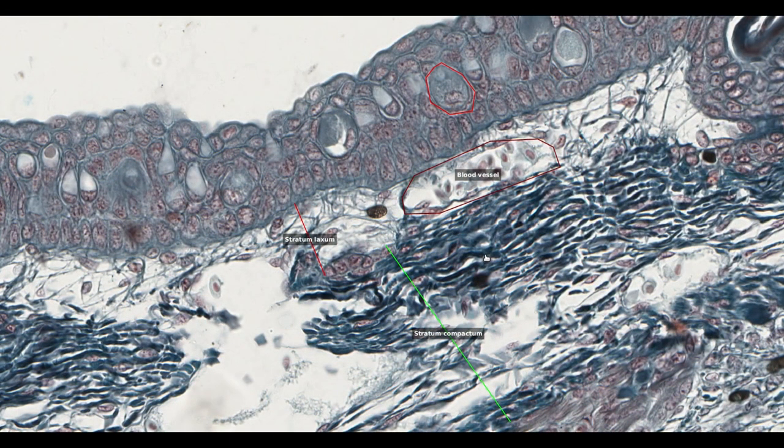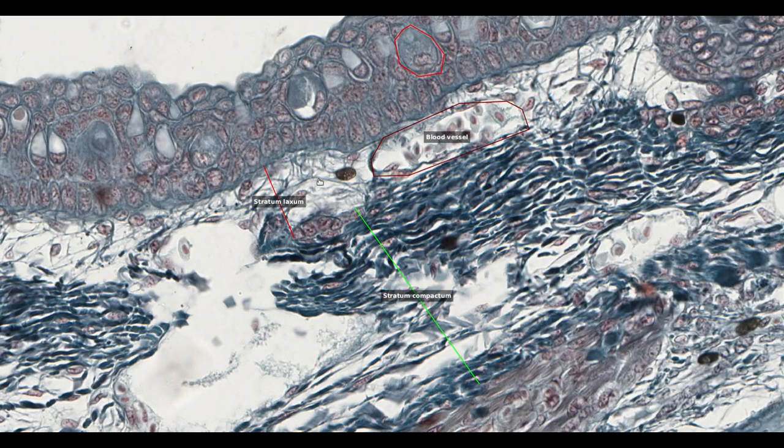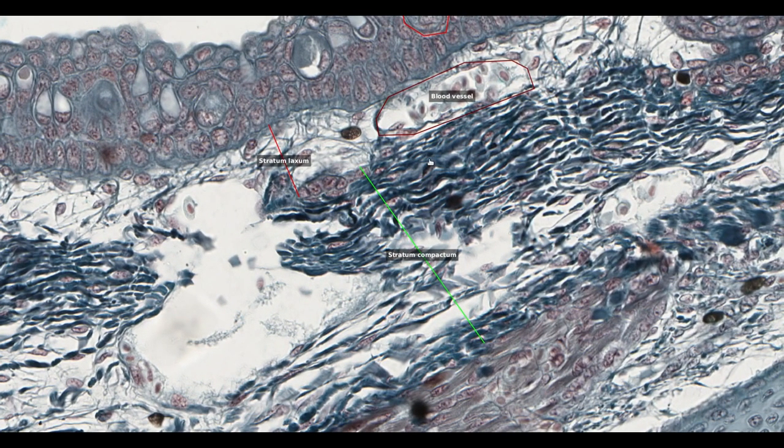Returning to slide 249, we can venture down into the dermis. The dermis is also made up of layers. That immediately below the epidermis is called the stratum laxum. Here we can make out loose connective tissue interspersed with blood vessels that will be providing the epidermal cells with the oxygen and nutrients they need to survive. The layer below that is formed of dense compact collagen fibers and is therefore called the stratum compactum.